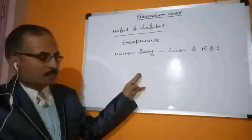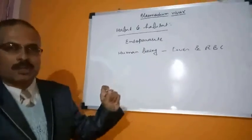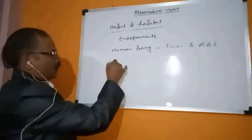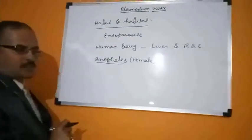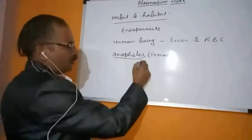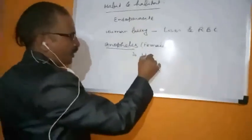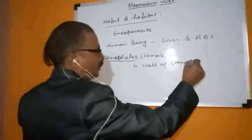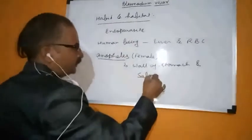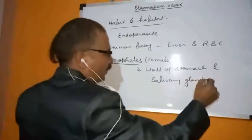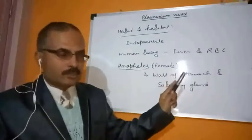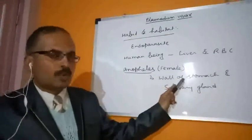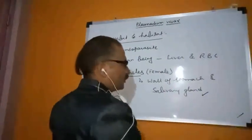So in the human being, Plasmodium vivax can be found either in the liver or in the RBCs. In the Anopheles mosquito, as we know, only the female Anopheles feeds on blood. In the female Anopheles, Plasmodium can be found either in the wall of the stomach or in the salivary gland. This is the habitat of Plasmodium vivax: in human beings it is found in the liver and RBCs, and in Anopheles it is found in the stomach wall and salivary gland.